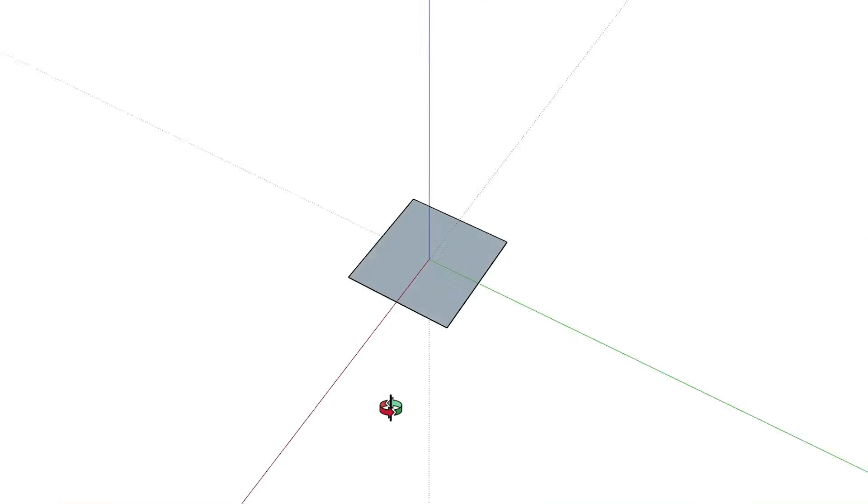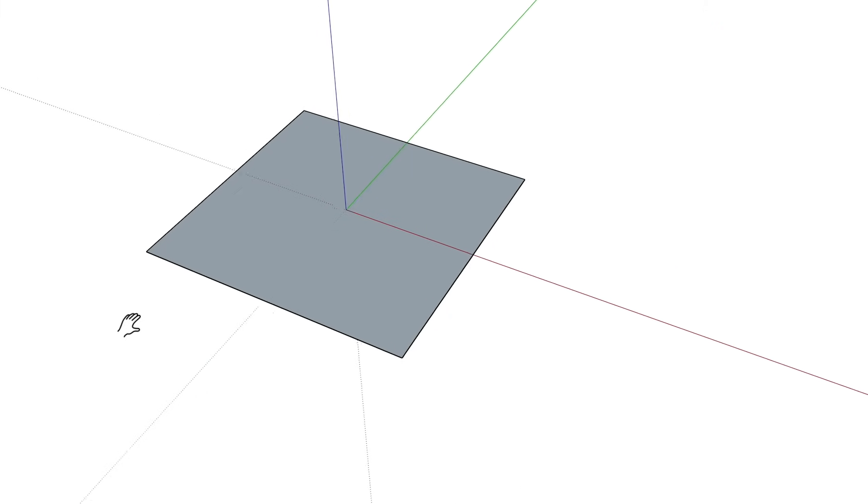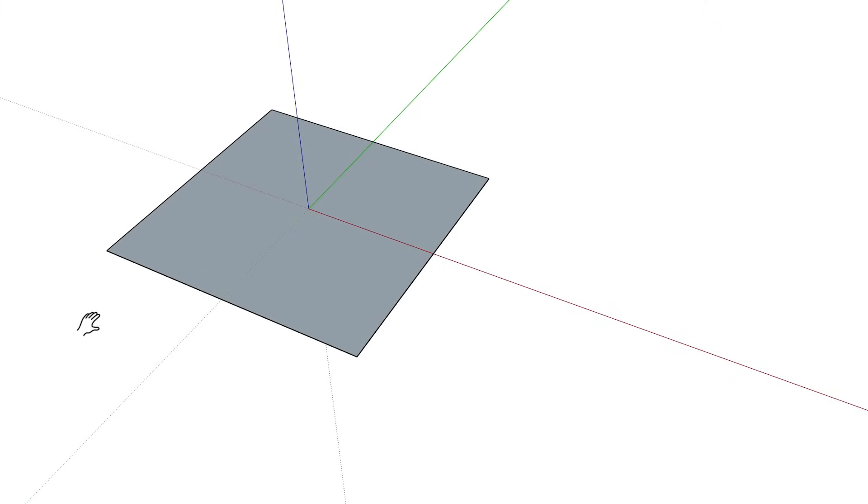Again, it matters where your cursor is on the screen, as you will orbit around that point. And if you need to pan your camera over to get a better view of the model, while pressing the center mouse wheel to orbit, also press and hold the shift key on your keyboard. Your cursor will turn into a hand, which is the pan tool. Move your mouse to pan your view. Then let go of the mouse wheel and shift key when you're done.